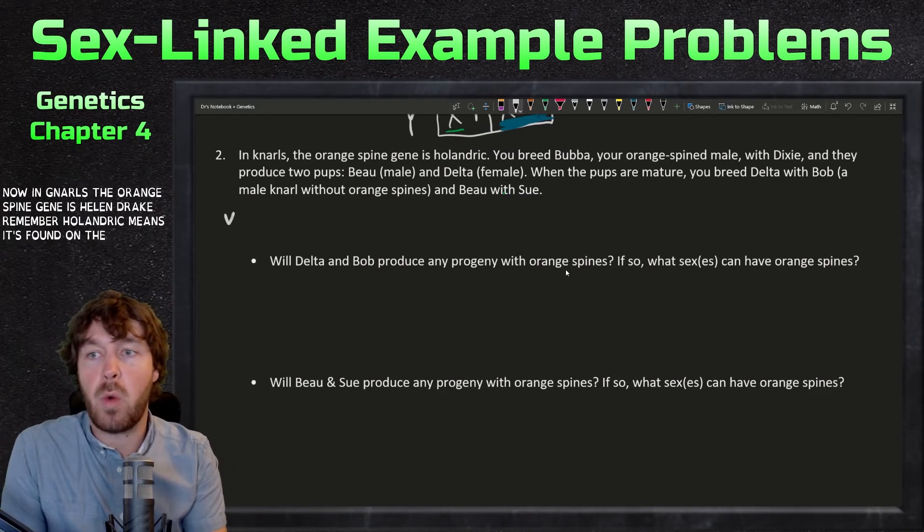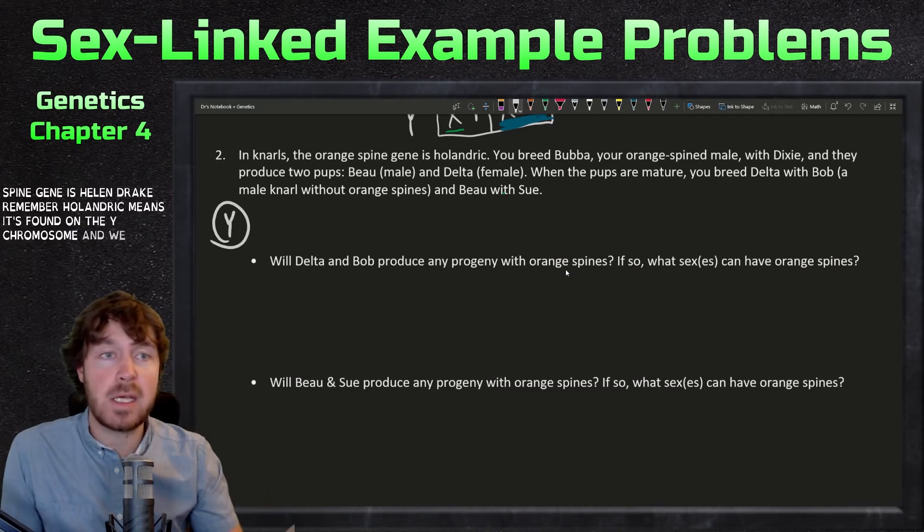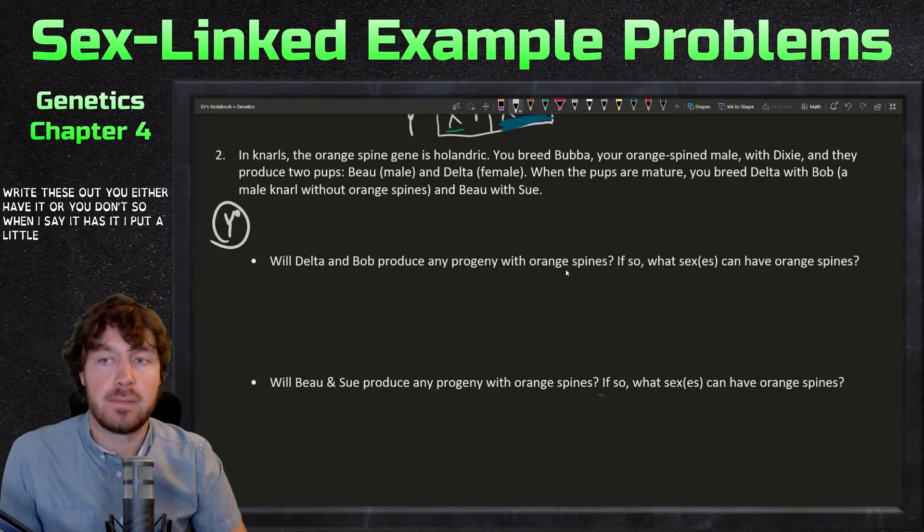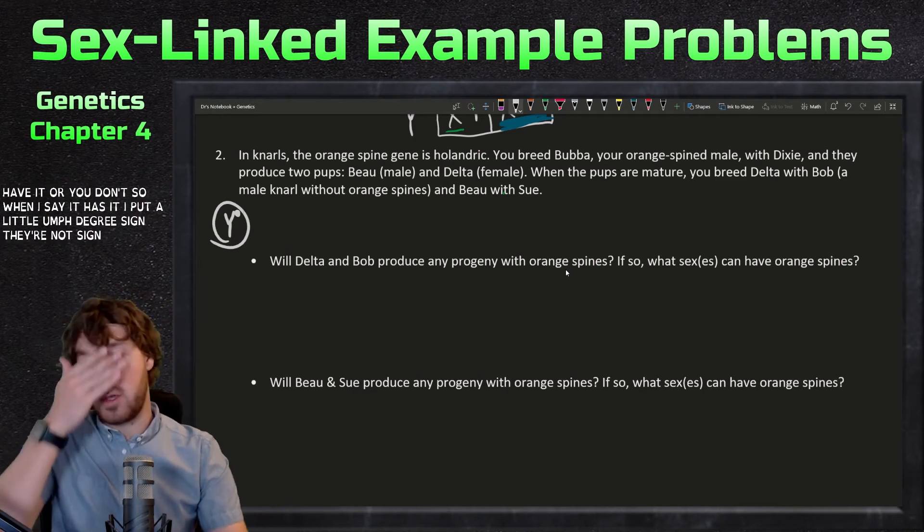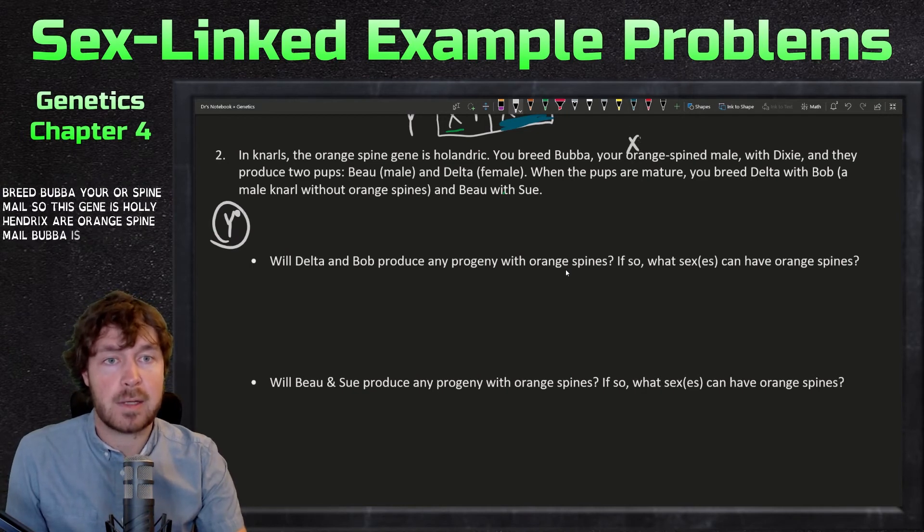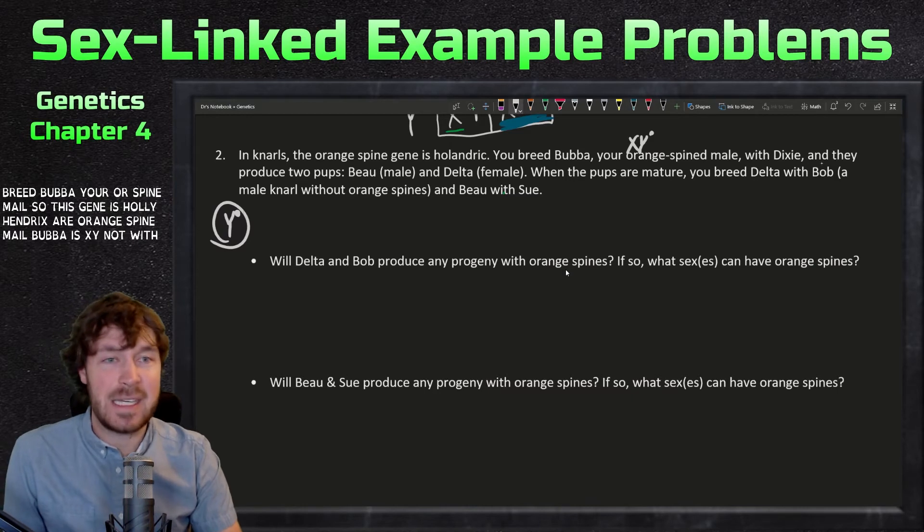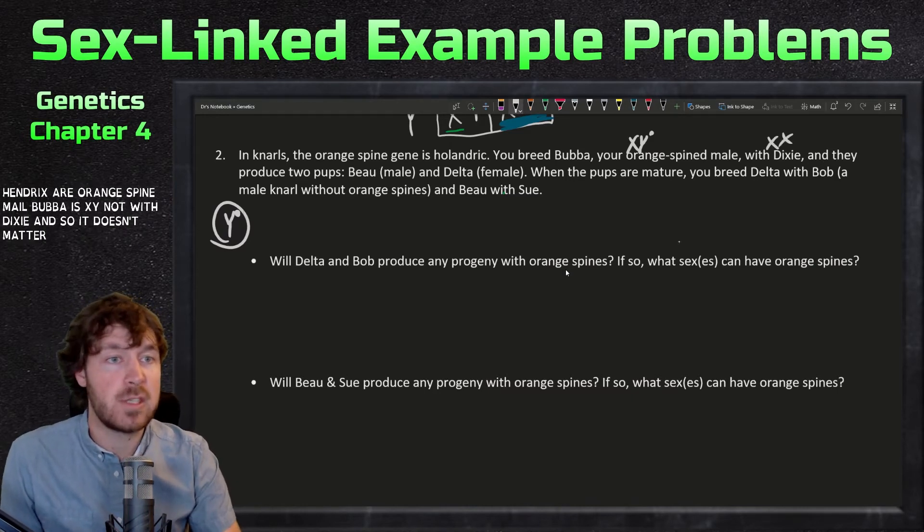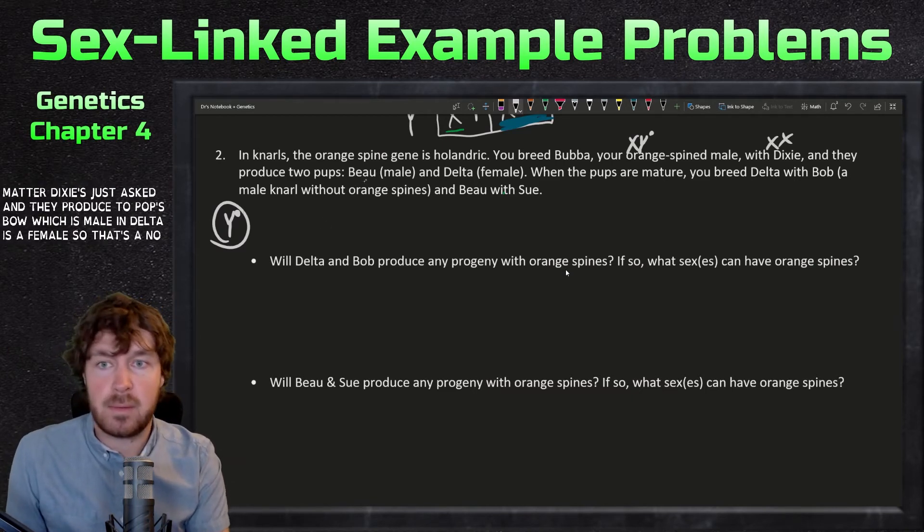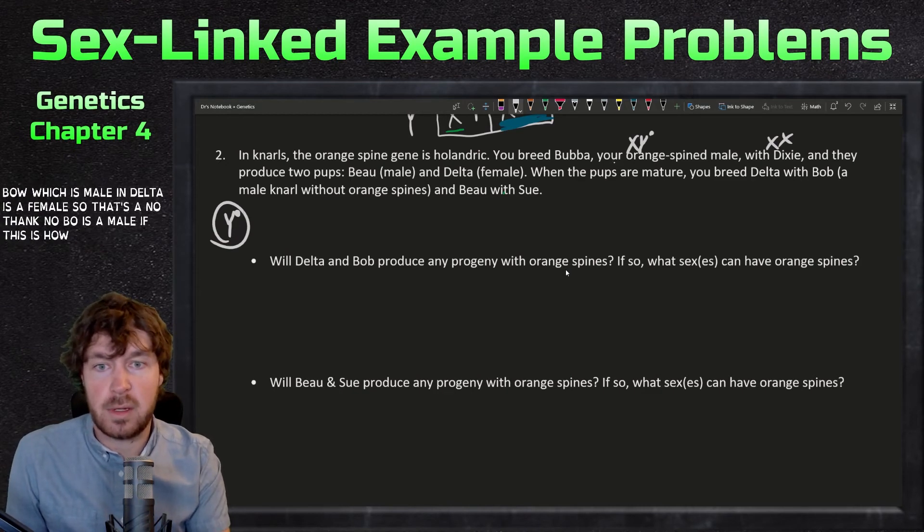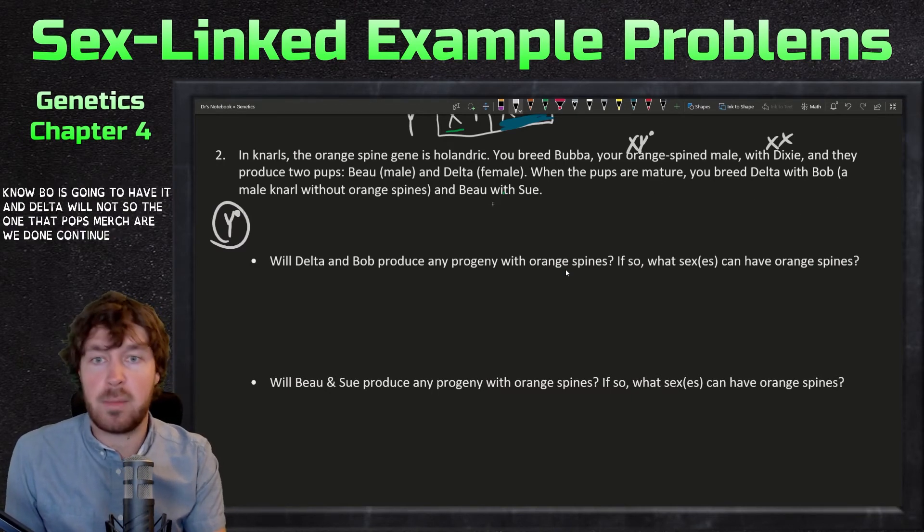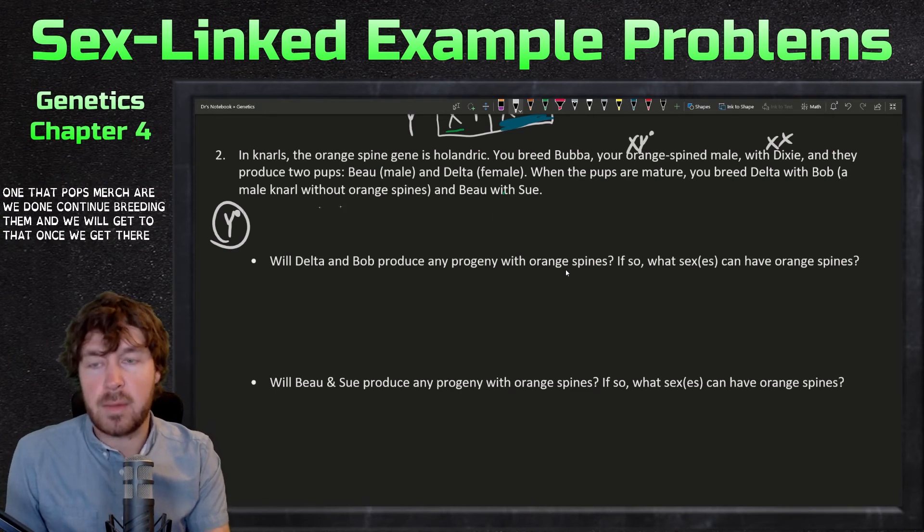Now in gnarls, the orange spine gene is holandric. Remember, holandric means it's found on the Y chromosome, and when you write these out, you either have it or you don't. When I say it has it, I put a little degree sign there or not sign. You breed Bubba, your orange spine male, so this gene is holandric. Orange spine male Bubba is XY naught with Dixie, and it doesn't matter. Dixie's just XX, and they produce two pups, Bo, which is male, and Delta is a female. Let's think: Bo is a male. If this is holandric, we know Bo is going to have it and Delta will not.